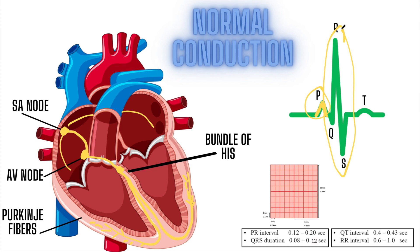Now that we know the pathway, let's look at what causes heart blocks. It's important to know ECG measurements: the bigger blocks on the ECG each represent 0.2 seconds, and the smaller blocks within them represent 0.04 seconds each. Knowing these measurements is going to help you troubleshoot and identify what's off, and that's going to help you diagnose heart blocks.